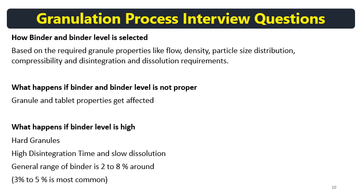How are binder and binder level selected? Based on required granular properties like flow, density, particle size distribution, compressibility, and disintegration and dissolution requirements. These are fixed based on R&D and stability trials. If binder is too low or too high, it will affect granule and tablet properties. Too high a binder level gives hard granules, high disintegration time, and slow dissolution. The general range for binder level is 3 to 5%, though some formulations use 2 to 8%.